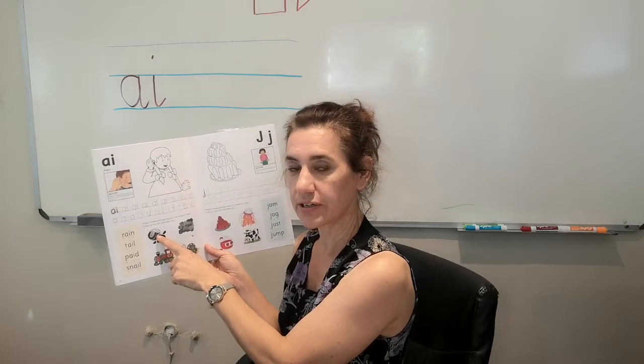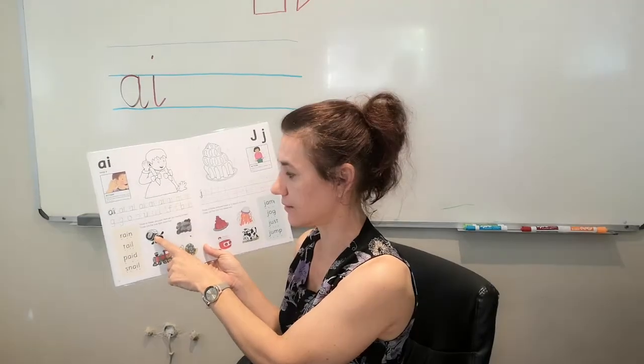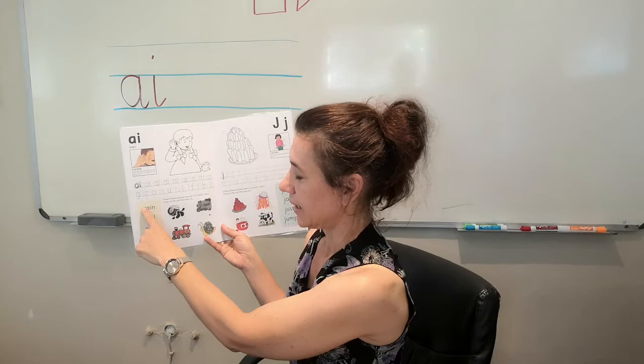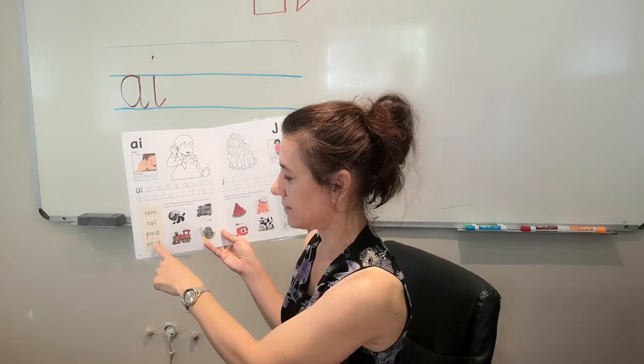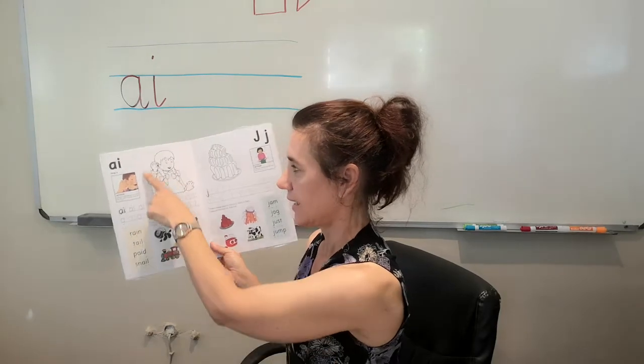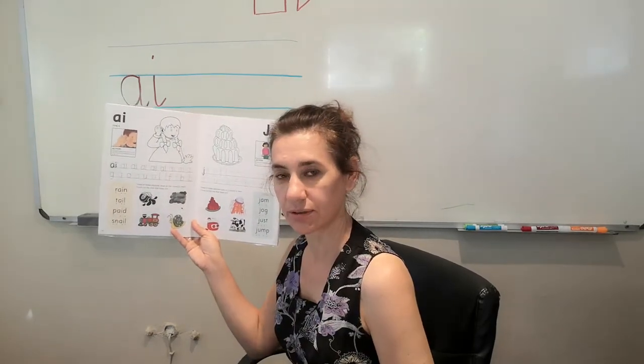So, ink. We can't hear an AI in ink. And try to read these four words: rain, tail, paid, snail. And color in your picture. Good!